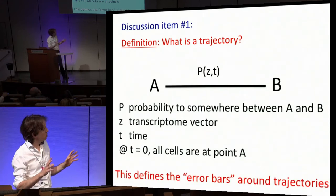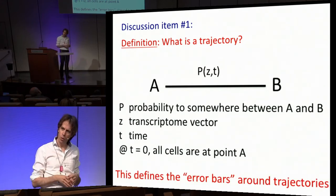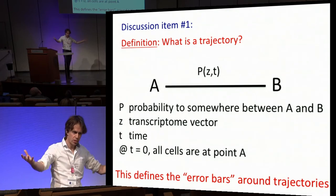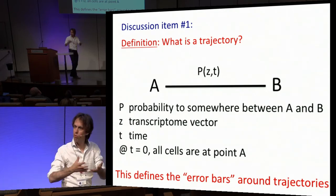This definition also gives you a very natural way to define error bars. If you have probability distributions that overlap, you can come up with p-values and statistical significance. I'm going to think about trajectories in this kind of definition, rather than being highways from A to B where cars are going left and right.